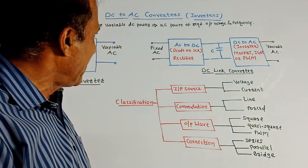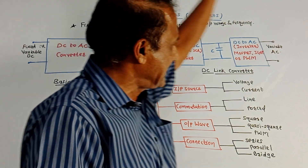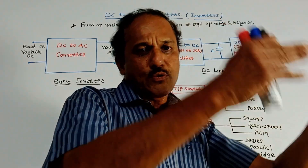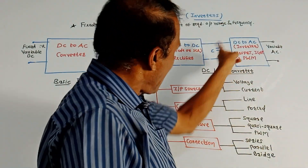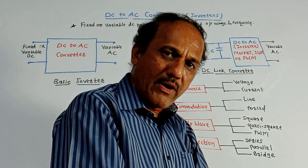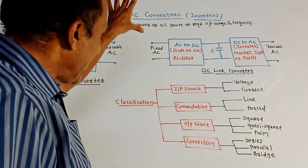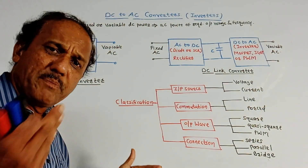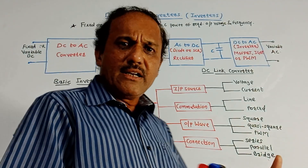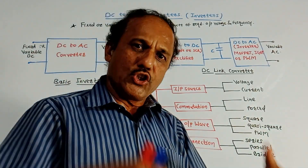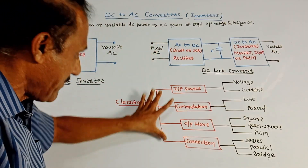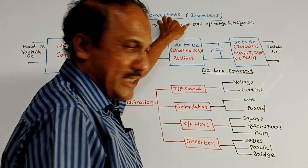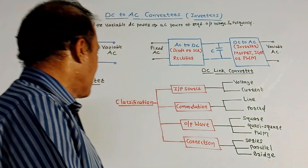In short, in industrial applications you want to convert fixed AC into variable AC using this technique. First you use rectification, which gives a DC output, and after that we convert that DC output into the required format of AC. So it is converting fixed AC into variable AC. You may also expect exam questions asking you to explain or list the classification — that is, what are the types of inverters. This diagram shows the different types of DC to AC converters and their classification.